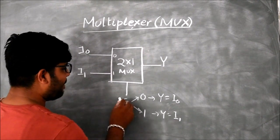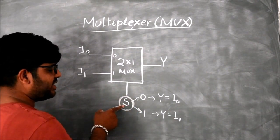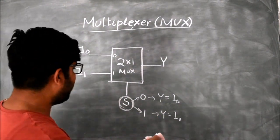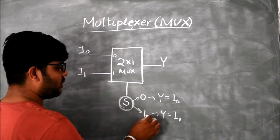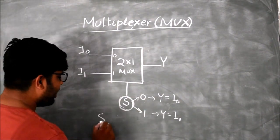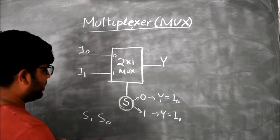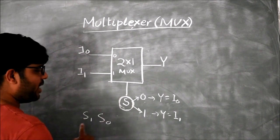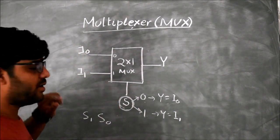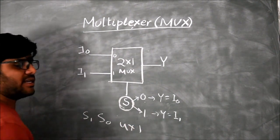As I am having only one selection line, the possible expressions will be S equal to 0 and S equal to 1, so 2 lines. If I take 2 lines, S0 and S1, I am getting 4 combinations: 00, 01, 10, 11. So 4 combinations means 4 inputs. 4 inputs means 4 cross 1 multiplexer.